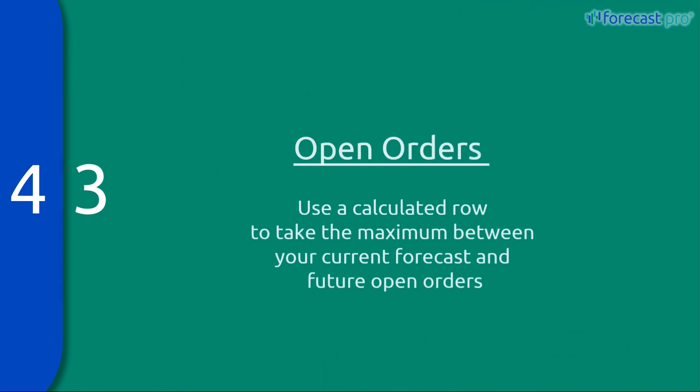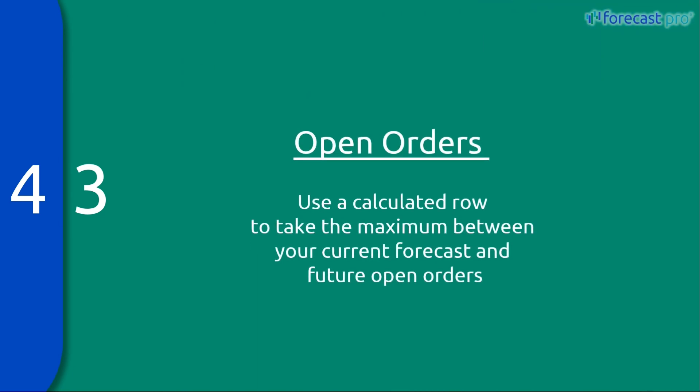In our third example, we're going to do an open orders comparison. We're going to load in open orders as an external data row, and then we're going to create a calculated row that will take the maximum of either our statistical forecast or our open orders, whichever one is greater. Let's take a look at this.